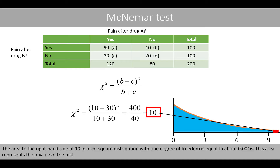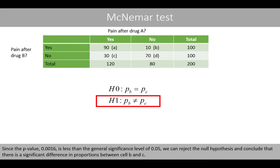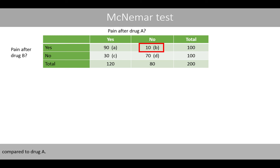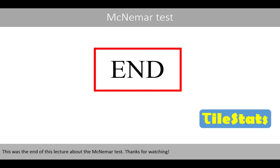This area represents the p-value of the test. Since the p-value of 0.0016 is less than the general significance level of 0.05, we can reject the null hypothesis and conclude that there is a significant difference in proportions between cell B and C. There are more individuals in the pairs who respond to drug B compared to drug A. This was the end of this lecture about the McNemar test.